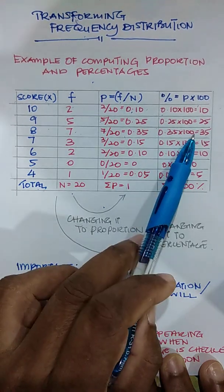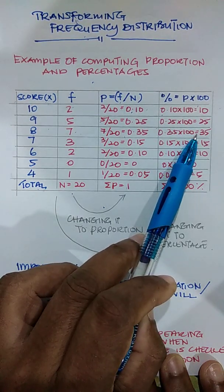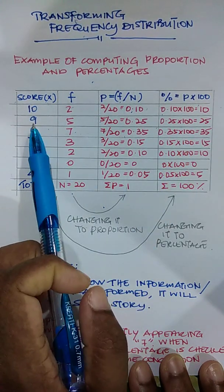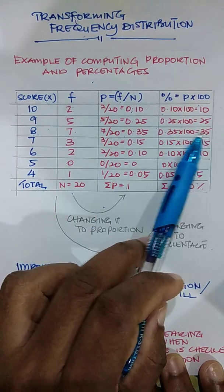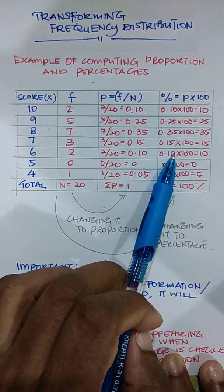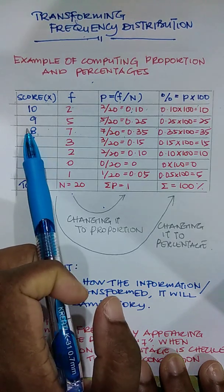When you look at the percentage, which one has the highest percentage? Number 8, score 8 has 35% of the data consists of score 8.